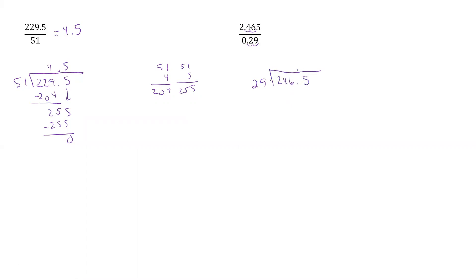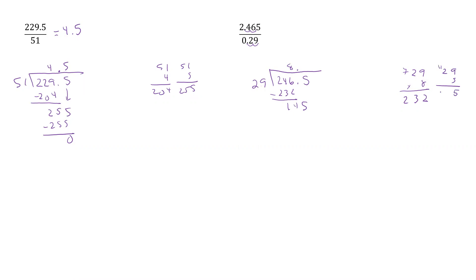We'll put our decimal in the numerator. If I take 29 times 9, I think that's going to be too big, so we'll take it times 8 and see what we get. 29 times 8 gives us 232. Subtract that: that gives us 145. Then 29 times 5 — that's 45, 10 plus 4 is 14 — so that's 145. Subtract that, we get 0. So this is equal to 8.5.